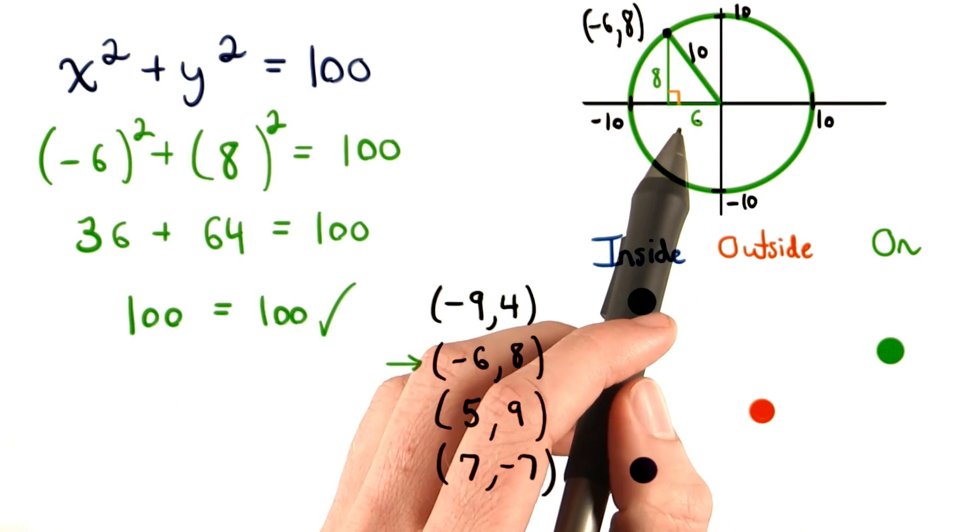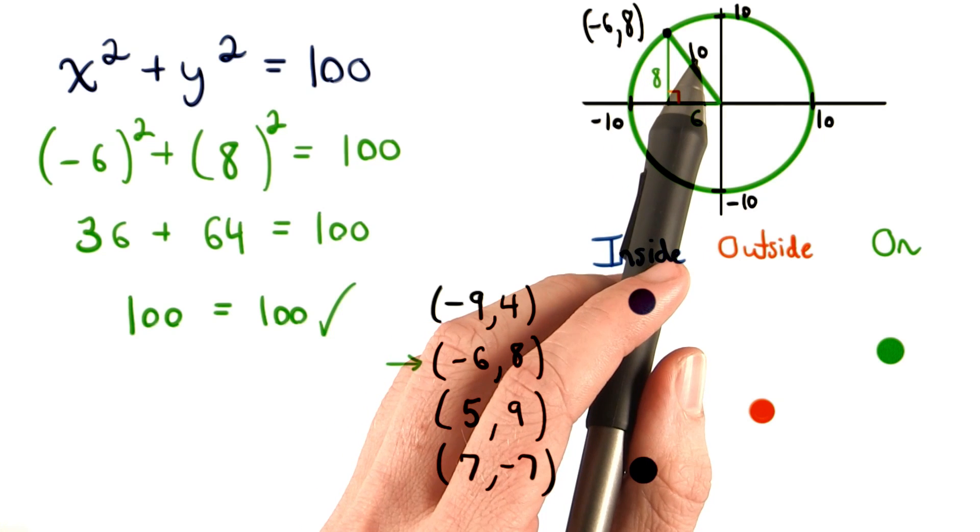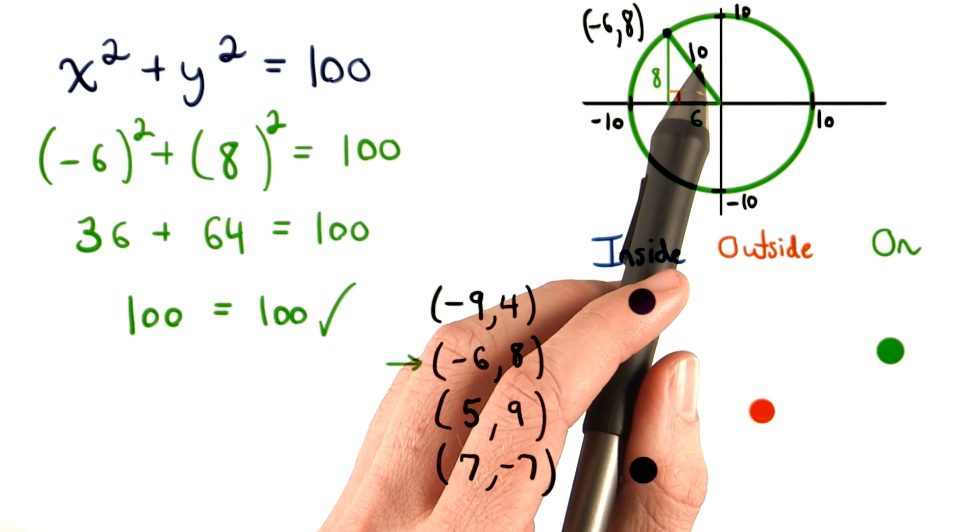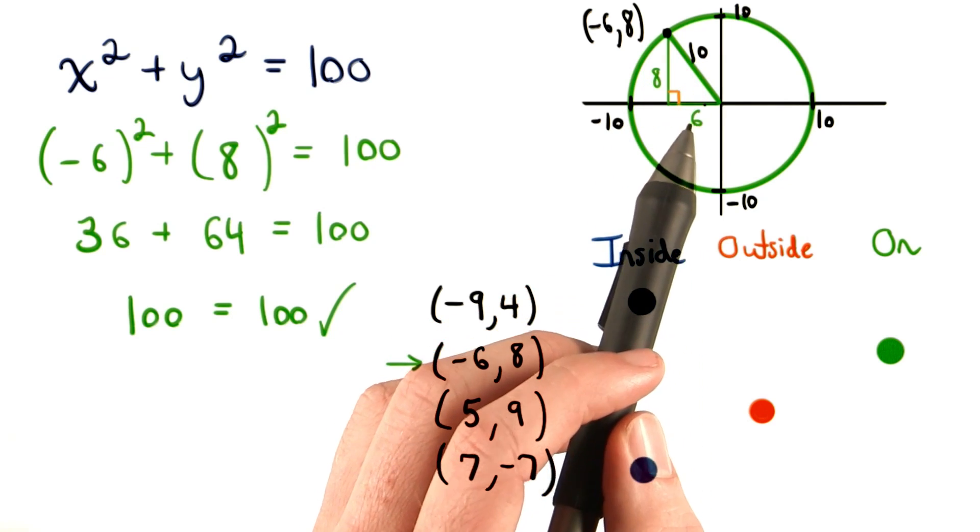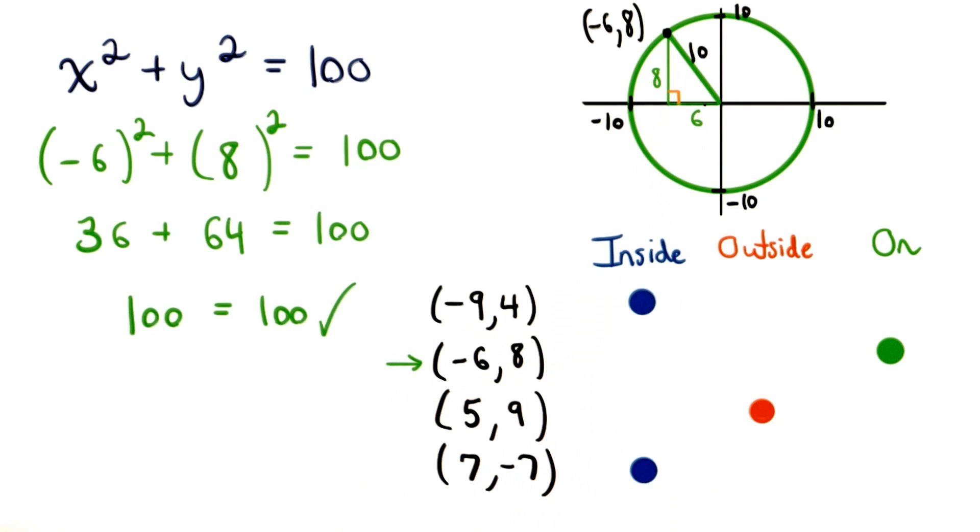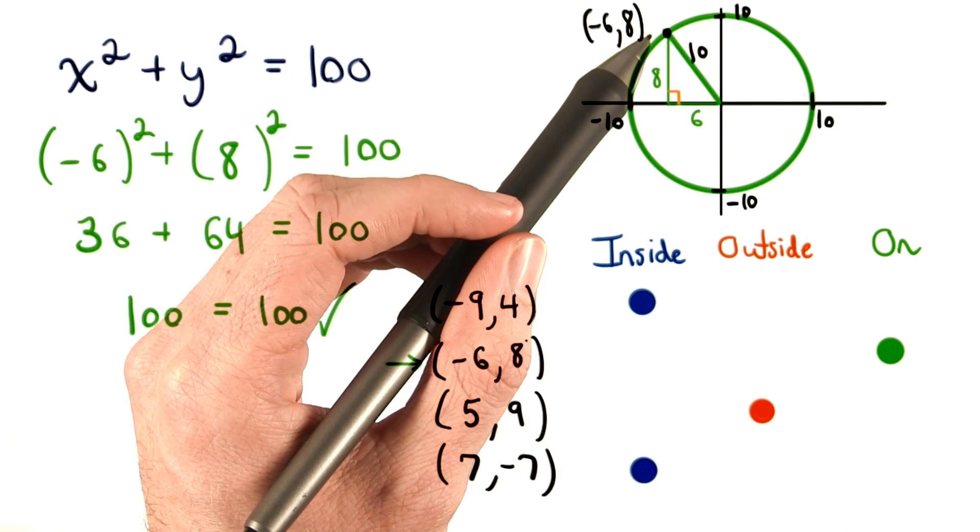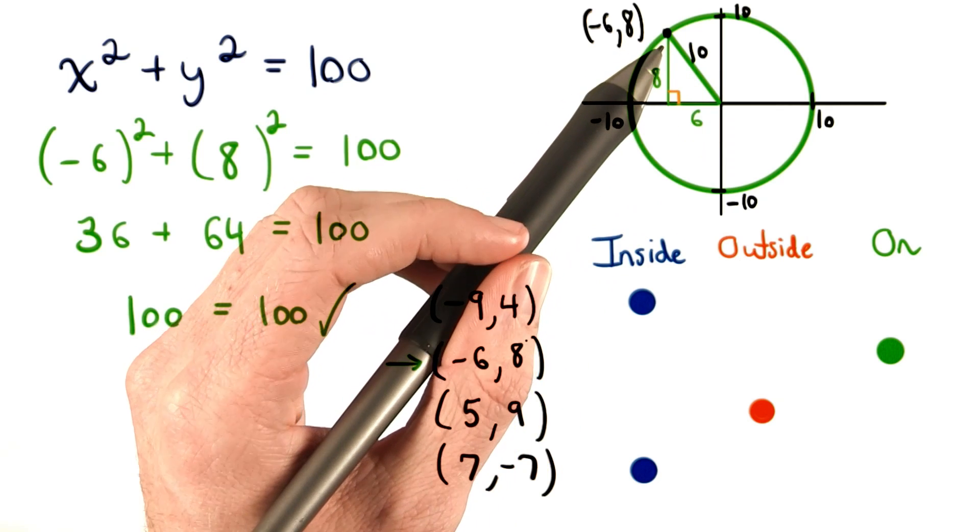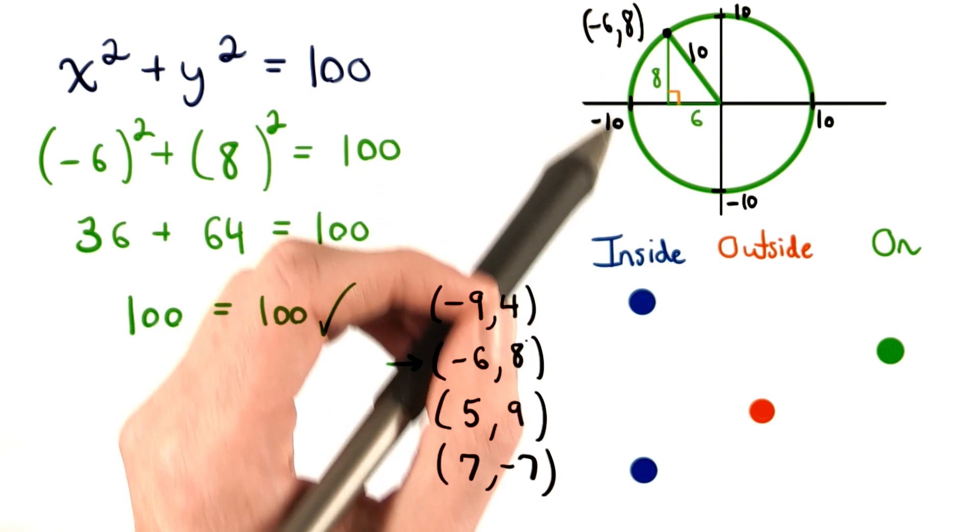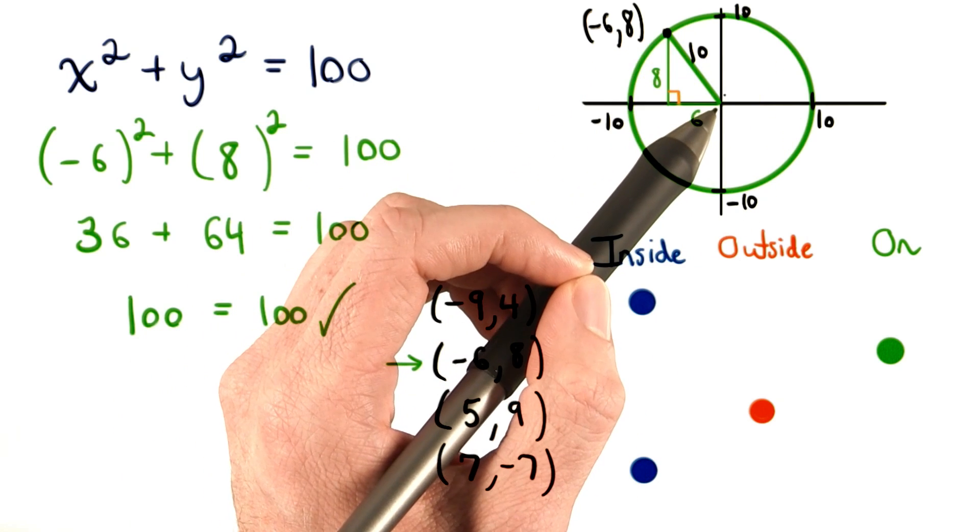This should also make sense because we really have a 3, 4, 5 triangle. The triangle has just been multiplied by 2, to give us a 6, 8, 10 triangle. So, we know that the distance from the origin to this point is 10 units. And that matches with our idea that any point on our circle is 10 units from the center.